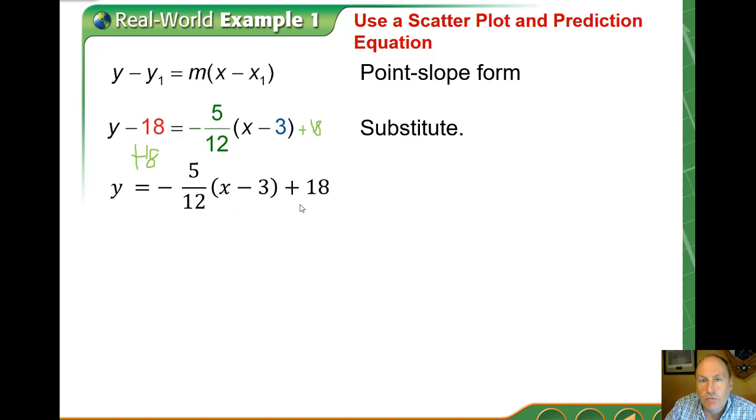Next, we're going to distribute the negative 5/12 to both parts of that grouping, which gives us negative 5/12 times x plus, because negative times negative is a positive, negative 5 over 12 times negative 3 is positive 15 over 12.